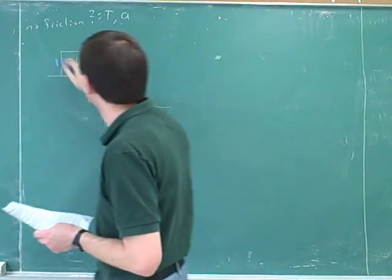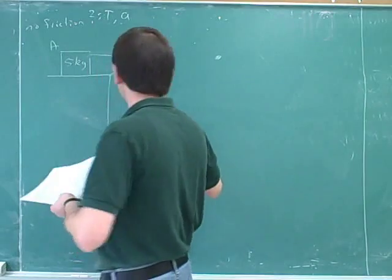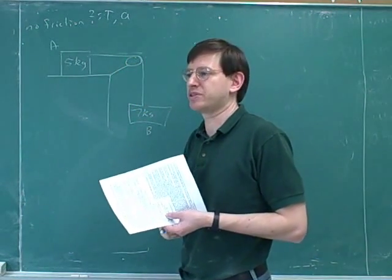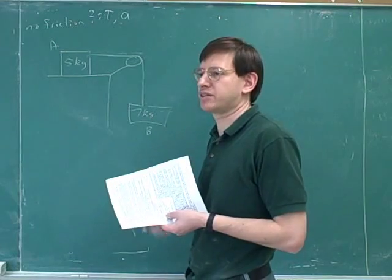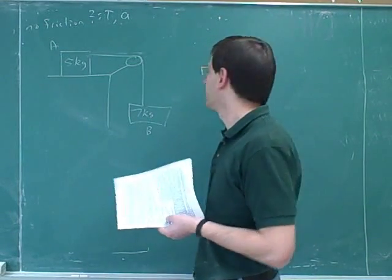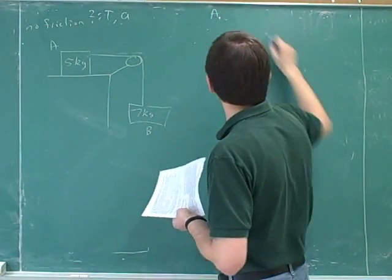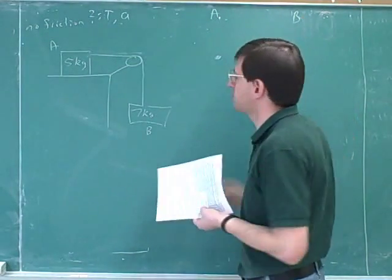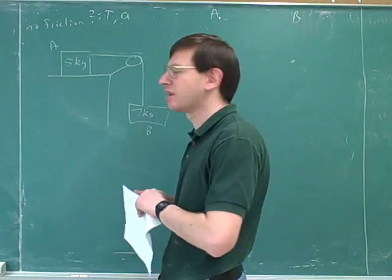First we should draw free body diagrams for each. So how many will that give us? Two. No. Four. No. X and Y. Yeah. So we will draw two free body diagrams because there's two objects. Oh, no. We're going to end up with maybe four Newton's second laws. But we are actually going to draw the two pictures here because there's only two objects.